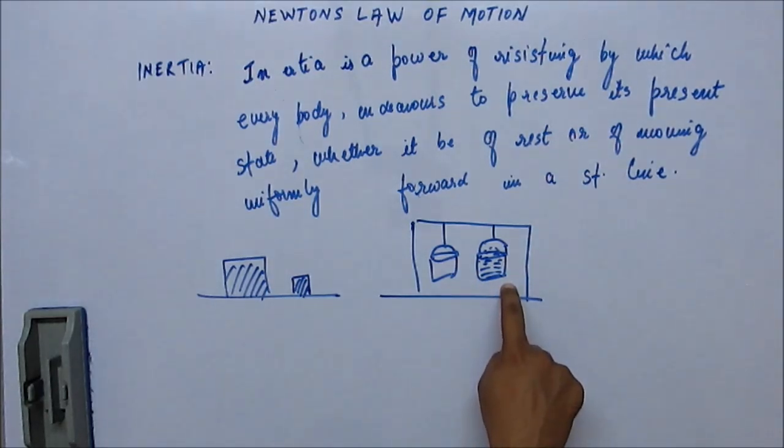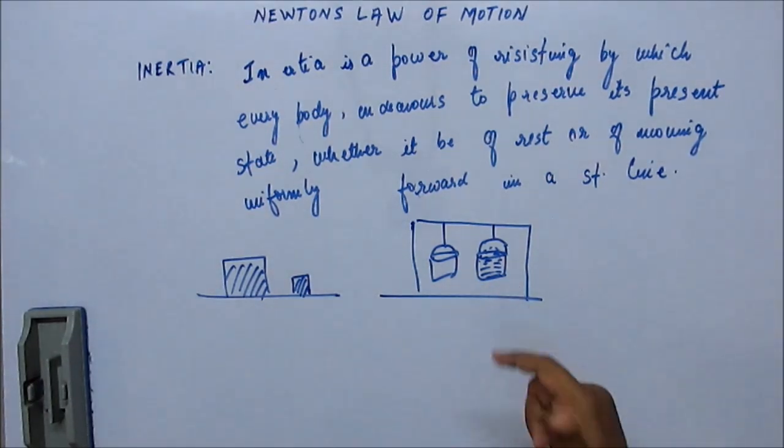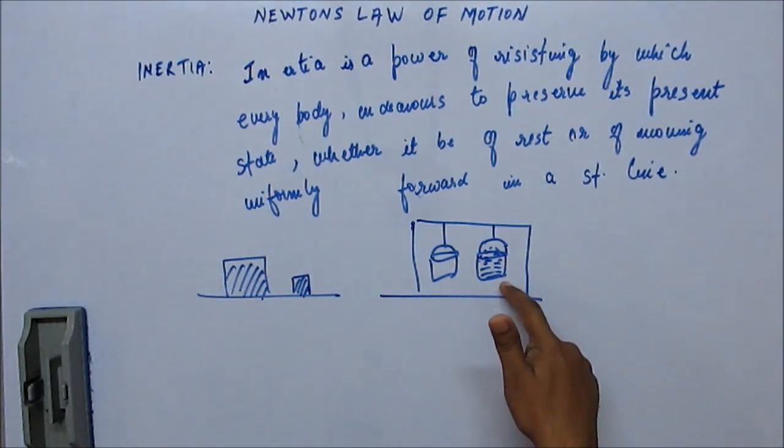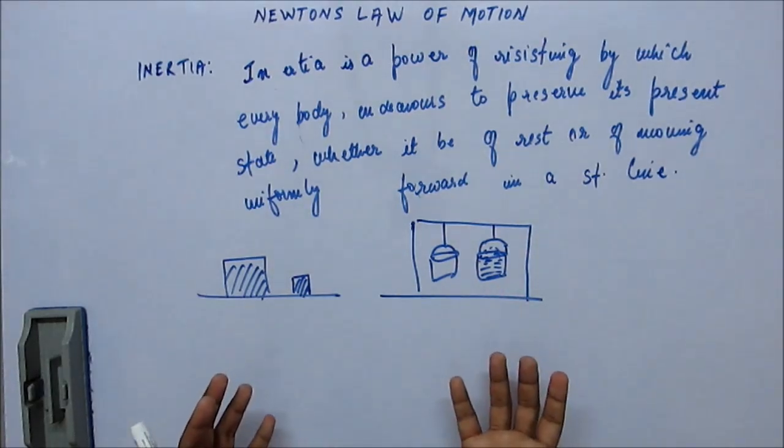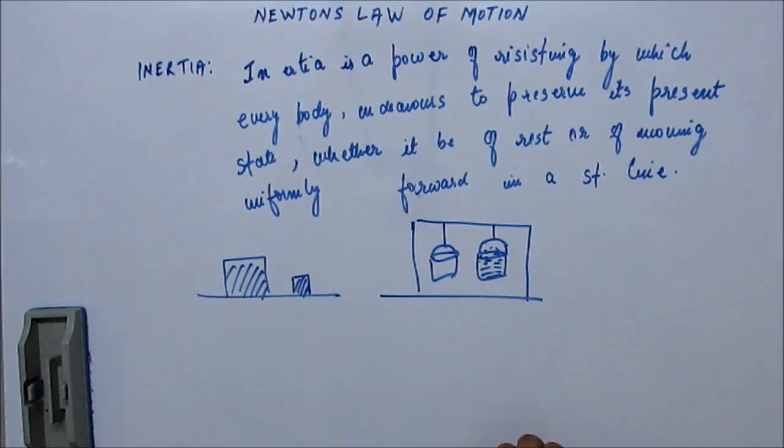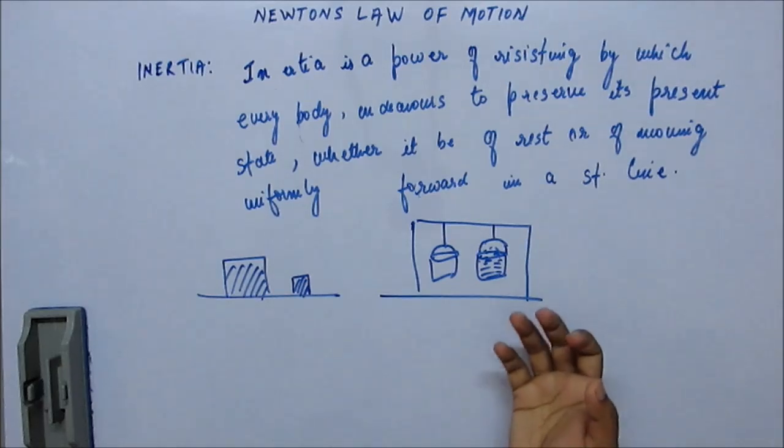So, this has a higher mass. So, to bring this one in motion, it will be a lot more difficult than this one. And once it is swinging, then to stop this bucket, it will be again requiring more endeavor from our side to stop this one. So, a heavier body has higher inertia. It has higher resistance to its change in state.